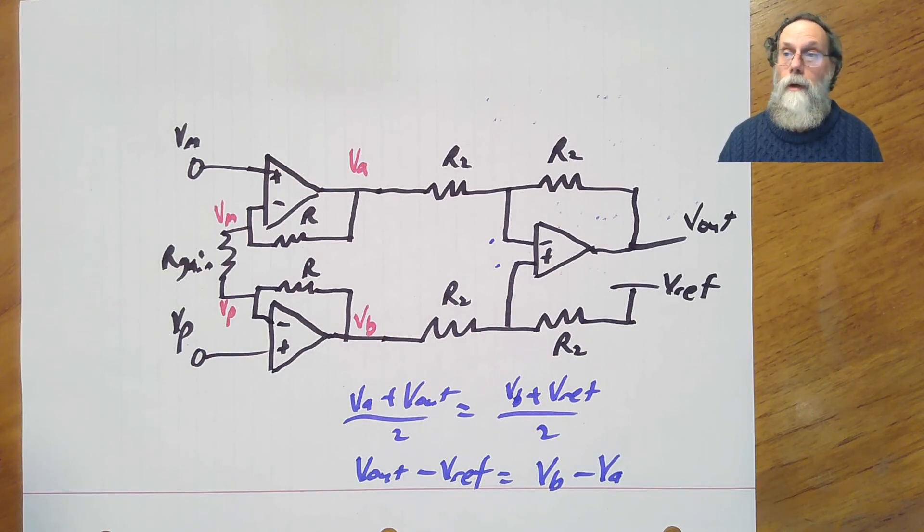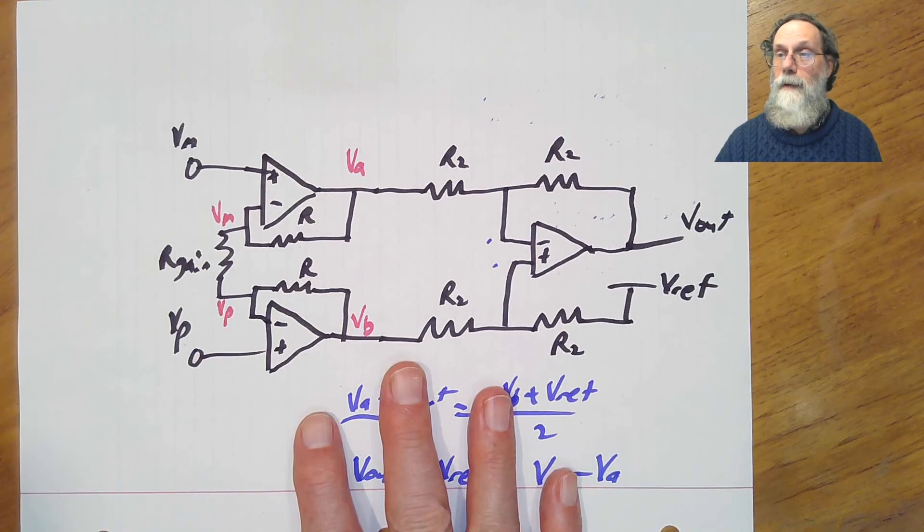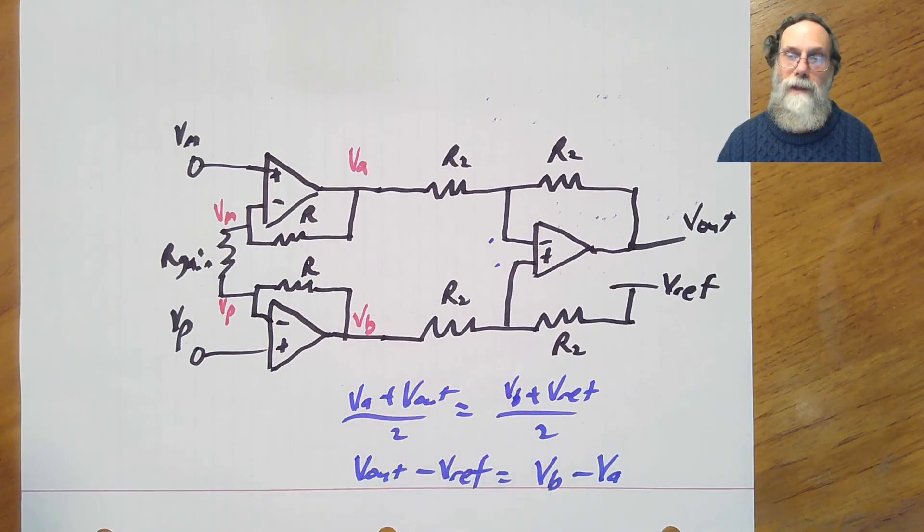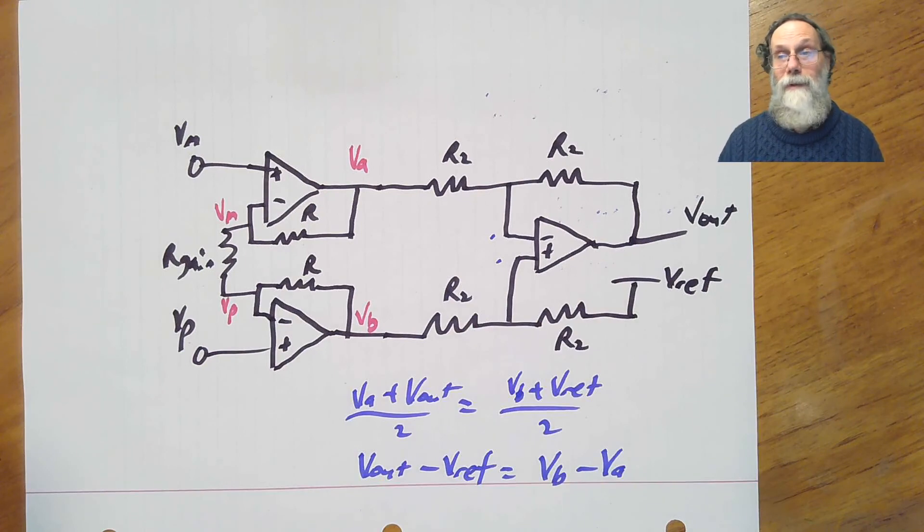We have one more instrumentation amplifier design to look at before we get to that lab though. This has been a three-op amp instrumentation amplifier. And for the EKG lab, you'll find you don't have very many amplifiers to work with, because the board we're going to be using for that only has room for one quad-op-amp chip. So if you needed two stages, like an instrumentation amplifier and another stage, and you needed a unity gain buffer for Vref, if you did it with this one, you would need five op amps, and you've only got four on the board. So in a subsequent video, we'll look at a two-op amp instrumentation amplifier. But for now, that's all you need to know about the three-op amp instrumentation amplifier.